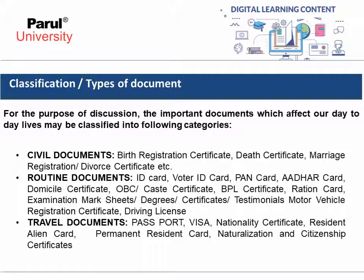The next type of document is travel documents. Travel documents may include passport, visa, nationality certificate, resident alien card, permanent resident card, and naturalization and citizenship certificate.